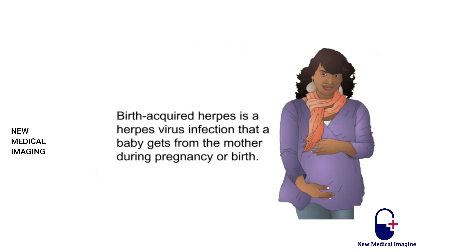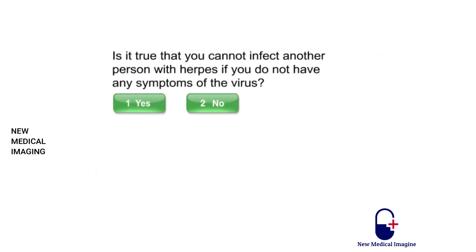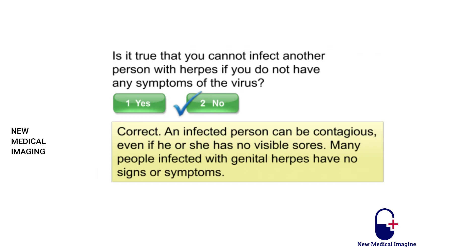Birth-acquired herpes is a herpes virus infection that a baby gets from the mother during pregnancy or birth. An infected person can be contagious even if he or she has no visible sores — many people infected with genital herpes have no signs or symptoms.